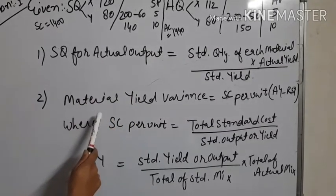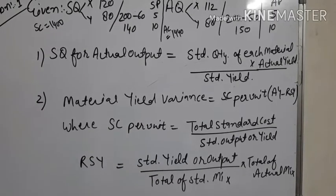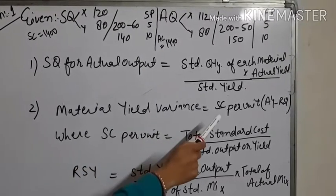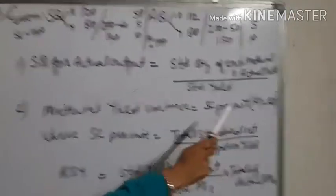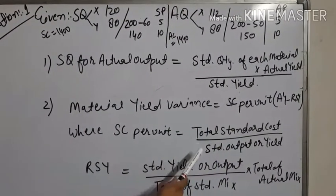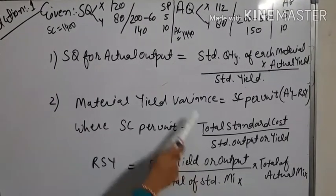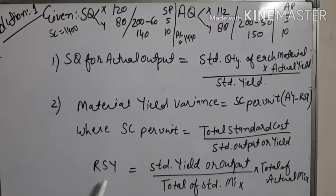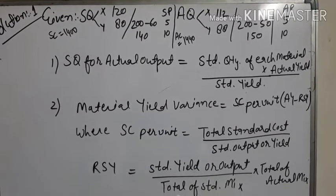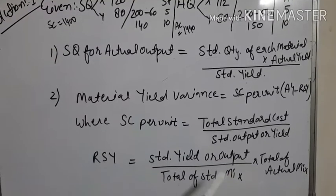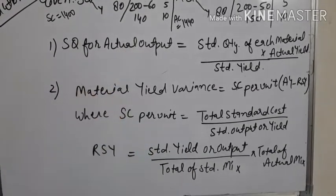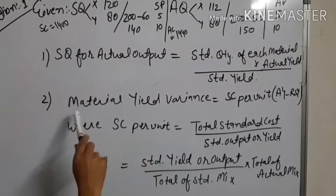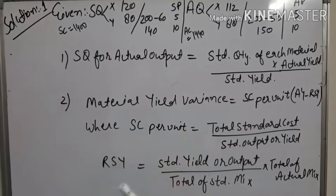Second, we will calculate material yield variance. In this question, material sub-usage variance will not be calculated. In place of material sub-usage variance, we calculate material yield variance. Material yield variance equals standard cost per unit multiplied by (actual yield minus revised standard yield), where SC per unit equals total standard cost (1400) divided by standard output (140). Revised standard yield equals standard yield divided by total standard mix, multiplied by total actual mix. Material yield variance is calculated only for the combined purpose, not separately.